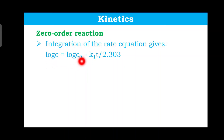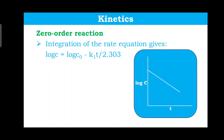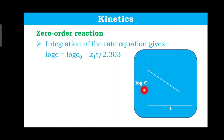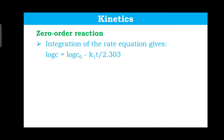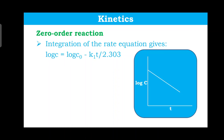Integrating the first order rate equation and rearranging gives: log C equals log C₀ minus kt divided by 2.303. This is again in the form of a straight line equation. So on the y-axis you take log C, and on the x-axis you take time t. When you convert concentration values to their log values and plot them against time, you get a straight line.